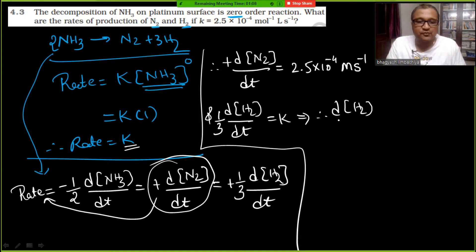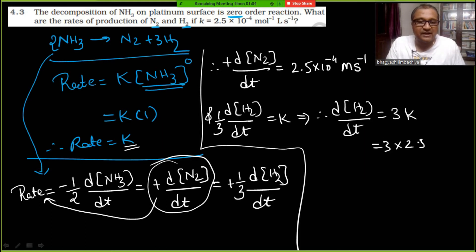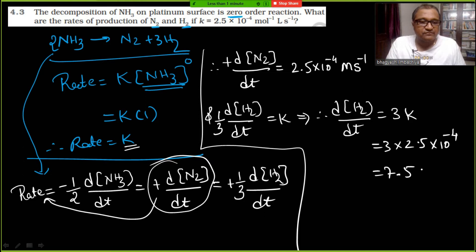Therefore d[H₂]/dt = 3K = 3 × 2.5×10⁻⁴ = 7.5×10⁻⁴ mol L⁻¹ s⁻¹.